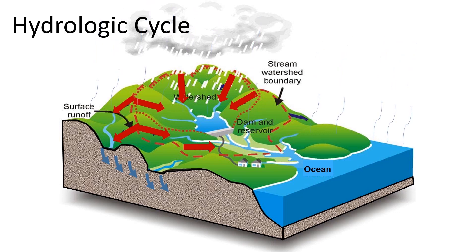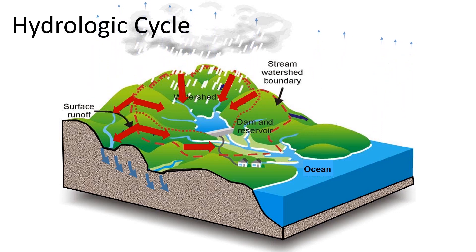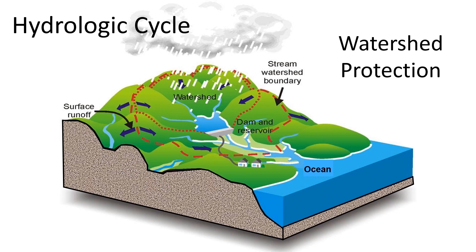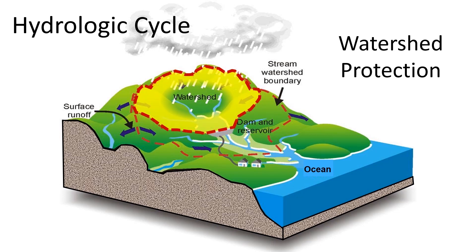Let's take a look at some of the things water utilities must consider when tapping into this water supply for the beneficial use of its customers. Water systems that use surface water as a water source are very interested in protecting the water quality of the source water. This is accomplished by protecting the watershed.